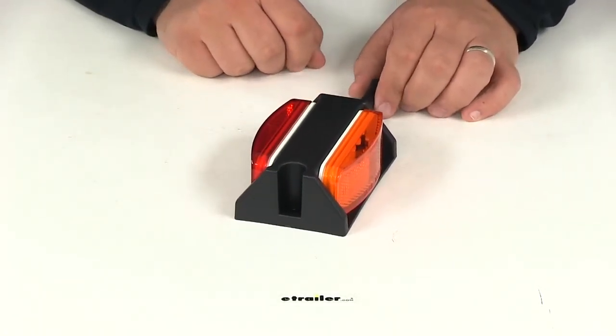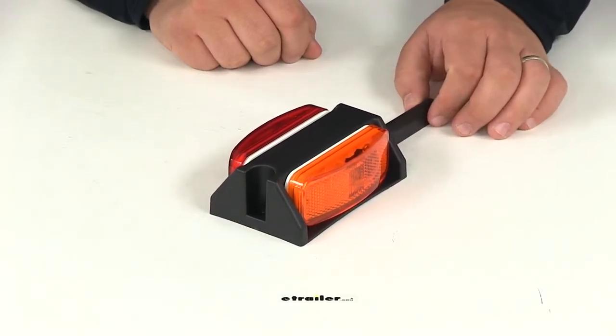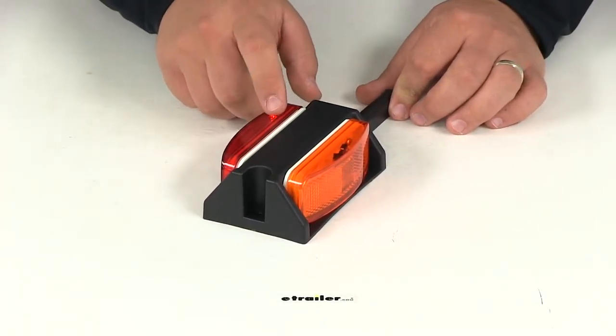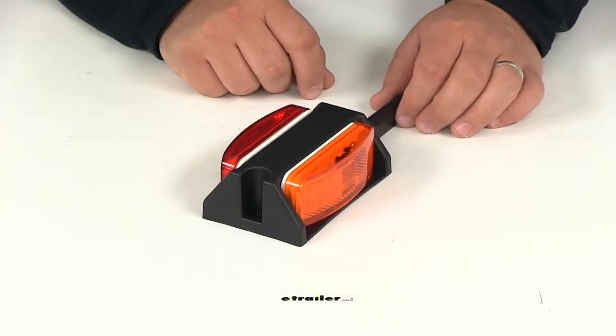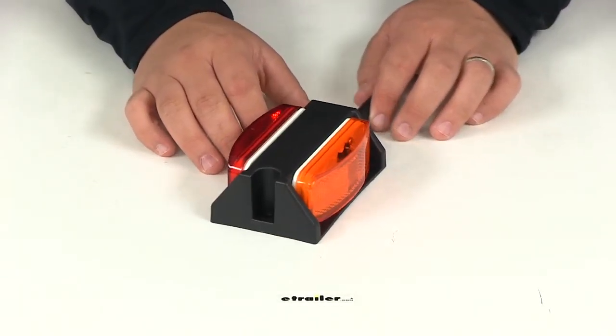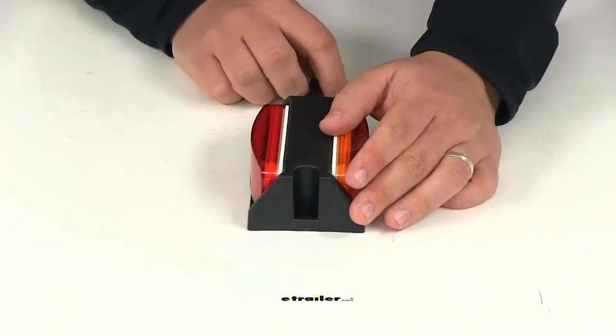You can mount this on top or on the side of your fender to mark the widest point on your trailer. It has reflectorized lenses that are Department of Transportation compliant, which eliminates the need for separate reflectors. This is weather and corrosion resistant.